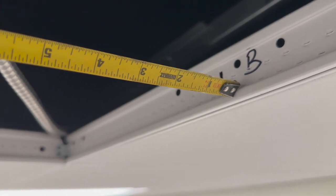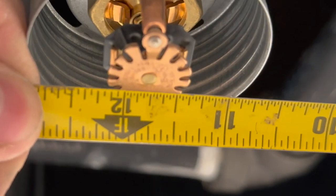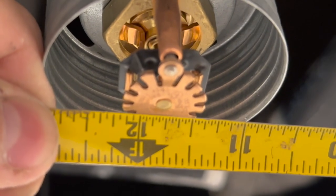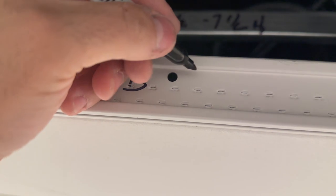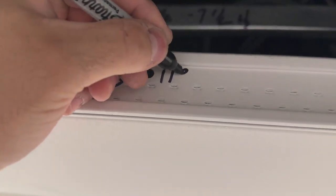Now for B, we're going to go to the same edge and here is going to be 11 and three quarters. So let's mark this here, 11 and three quarters.